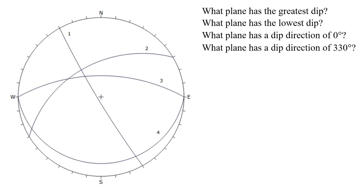Now let's look at a more difficult example with four different great circles labeled 1, 2, 3, and 4, with a set of questions. First: what plane has the greatest dip? The circle closest to the center has the greatest dip, and great circle number 1 is probably the closest, so the answer is 1. For the lowest dip, the great circle should be furthest from the center — great circle number 4 is the furthest, so the answer is 4.